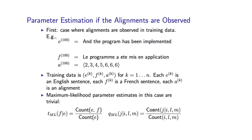As a warm-up for the EM algorithm, let's first consider the case where the alignments are observed. Let's assume we're in this idealized setting where we do actually have training examples with alignments. Each training example would now be a triple E, F, A. For example, the hundredth training example might specify an English sentence, a French sentence, and an alignment between them — where the first word in French is aligned to word two, the second word to word three, and so on. In this case, deriving maximum likelihood parameter estimates is basically trivial, and it looks very much like other parameter estimates we've seen earlier in the course: the ML estimates are just ratios of counts taken from our training data.